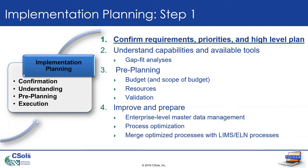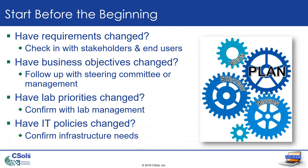Step one is to confirm requirements, priorities, and your high-level plan. We actually want to start before the beginning of the project — going back to where we first started picking a vendor. When CSALS does a vendor selection we define requirements, understand business objectives, and understand policies and priorities. It can be six, eight, sometimes eighteen months between vendor selection and when implementation actually starts, so we want to go back to the lab, back to our stakeholders, and make sure requirements are still the same. Check in with lab management: have priorities changed? Do we have new instruments?